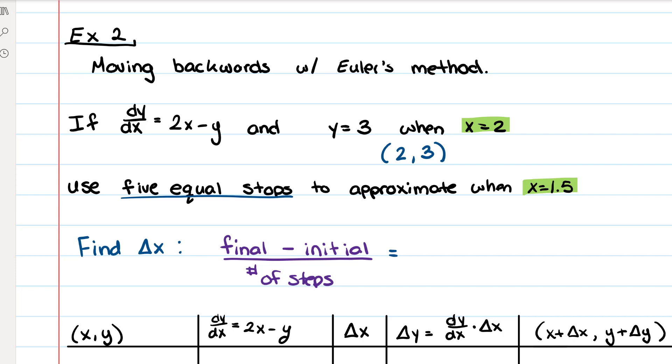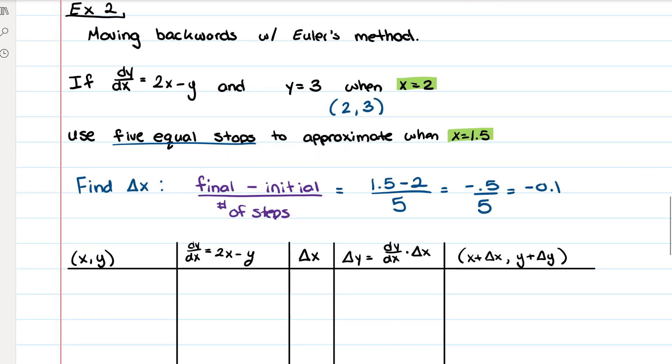So this is going to give us 1.5 minus 2 divided by 5, so negative 0.5 divided by 5, which is negative 0.1. So our delta x is going to be negative 0.1.